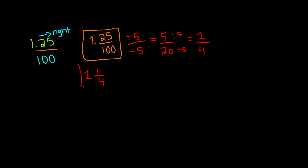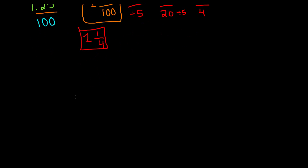So this is our simplified fraction form — our mixed number — for the decimal 1.25. Let's go ahead and do another example. This time, let's say that we have 0.0006.